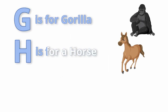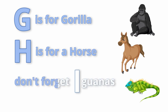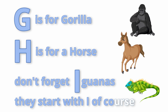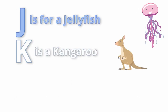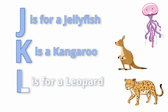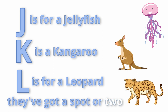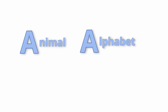H is for a horse. Don't forget iguanas — they start with I, of course. J is for a jellyfish. K is for a kangaroo. L is for a leopard. They've got a spot or two. Animal alphabet.